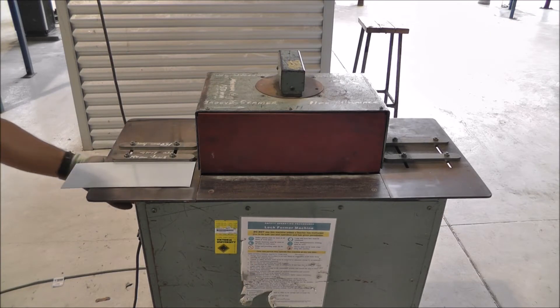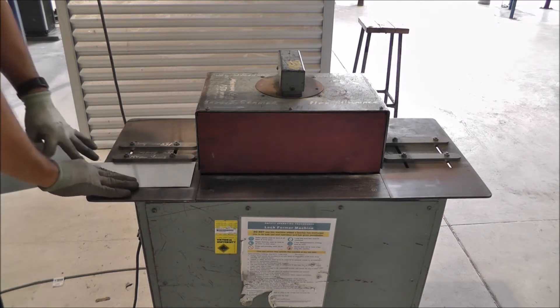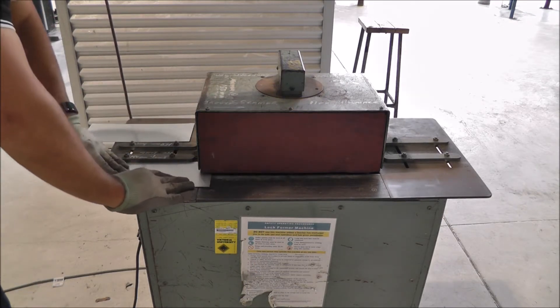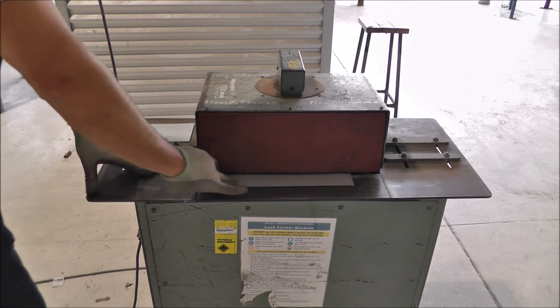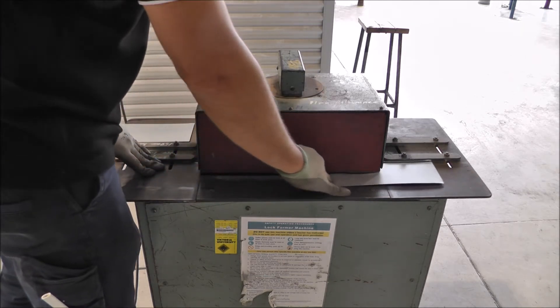Here we have our Pittsburgh machine, which puts the groove seam into the metal. Slide the metal into the machine using the guide and ensure it runs straight, otherwise the joint will distort.